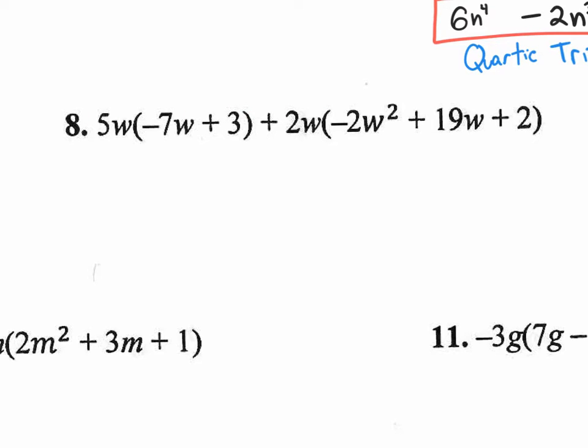Let's distribute first because PEMDAS, you do multiplication before adding and subtracting. Distributed property is multiplication. Combining like terms really is adding and subtracting. So it makes total sense that we're going to distribute before combining like terms. So I'm going to circle what I'm going to distribute. 5w times negative 7w, that's going to be a negative 35w times w is w squared. And then 5w times 3, that's going to be simply 15 with 1w.